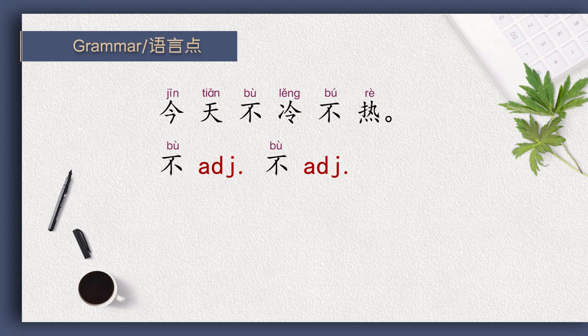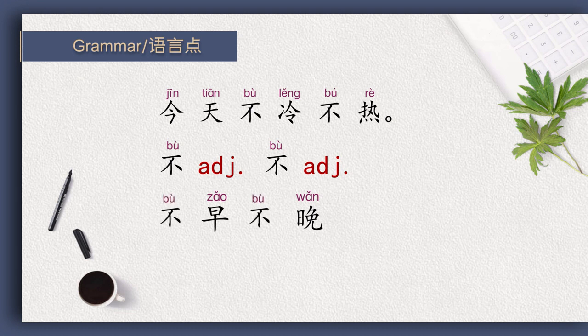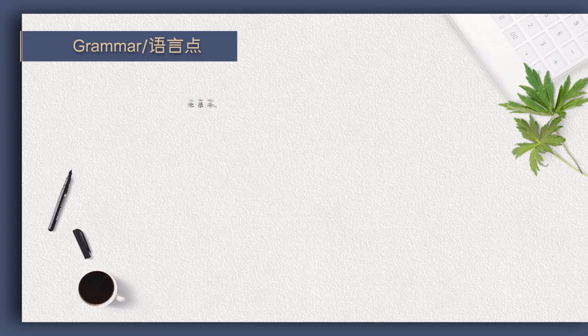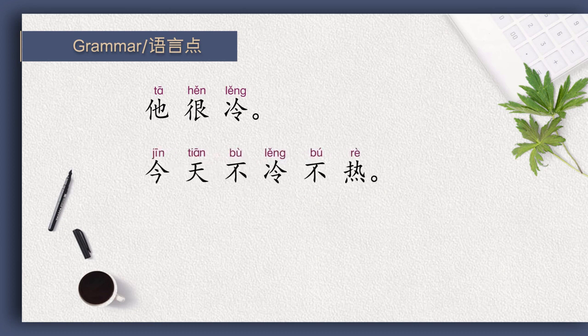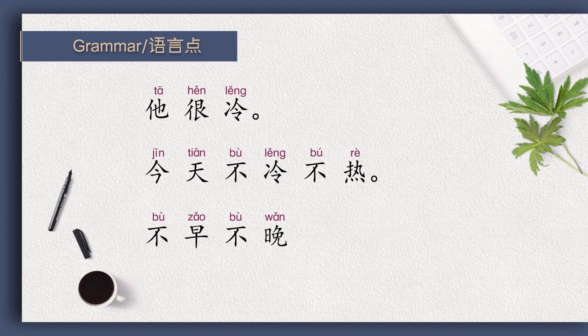Let's see one more example. 'Early' in Chinese is 早，and 'late' in Chinese is 晚。 Please read with me. 它很冷。 今天不冷不热。 不早不晚。